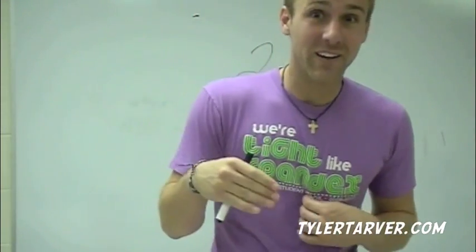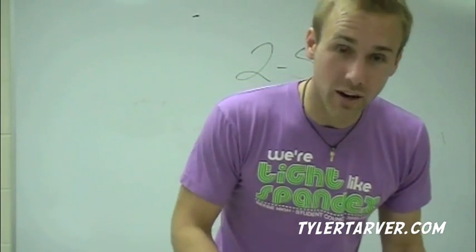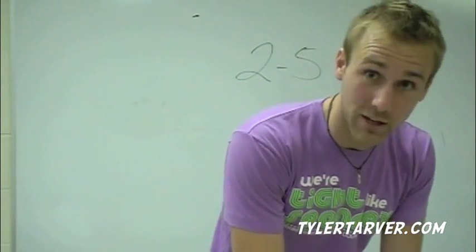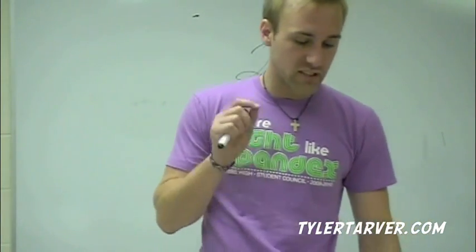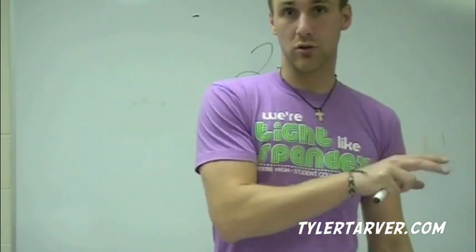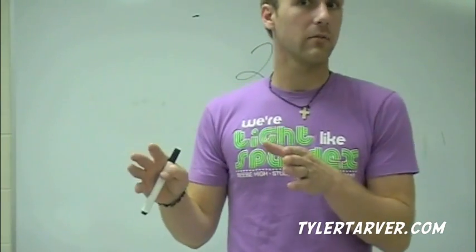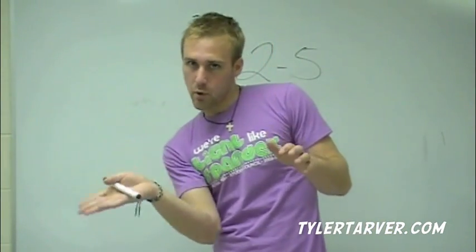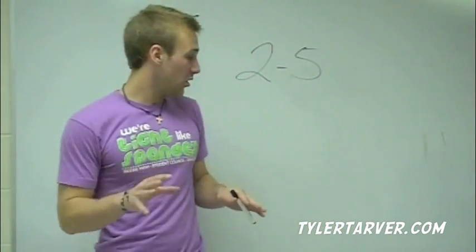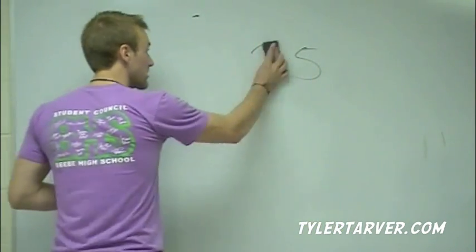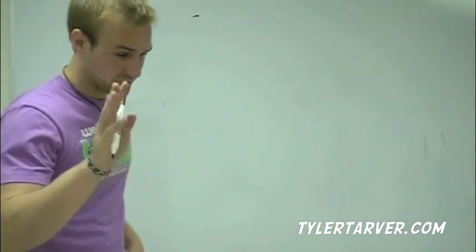In the real world of math, a proof is an argument that uses logic, definitions, properties, and previously proven statements to show that a conclusion is true. The things you use to prove something have to already be true. You're proving something by taking steps. Write these down because you're going to use them in this section and the next section when we get to geometric proofs.